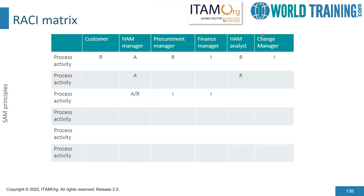A RACI table would look like this. At the top, we have customer, SAM manager, procurement manager, finance manager, SAM analyst, and change manager. Different process activities are listed in the leftmost column. We can see clearly who is accountable for the top three processes, who are responsible, who are informed, and who might be consulted. There is no consulting letter visible here — the C is missing, but that's okay.